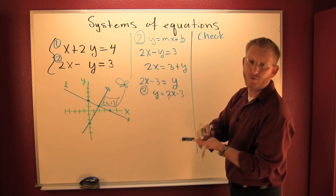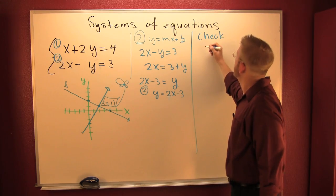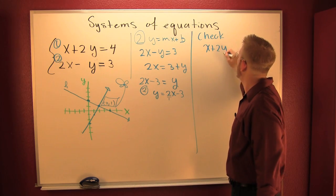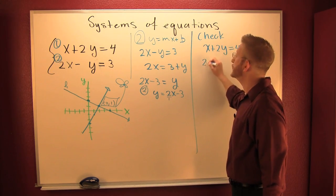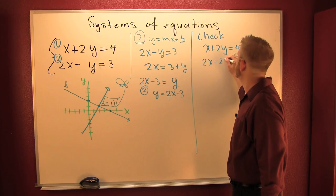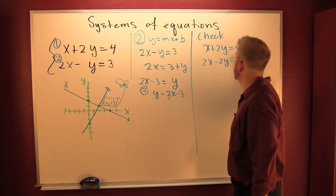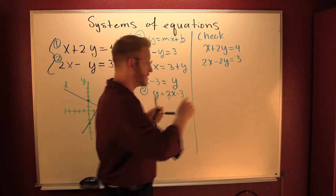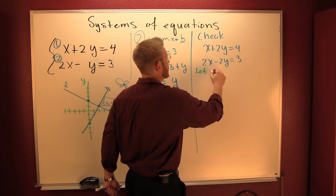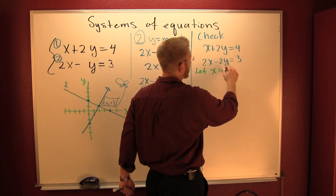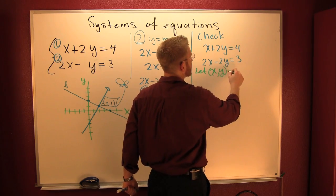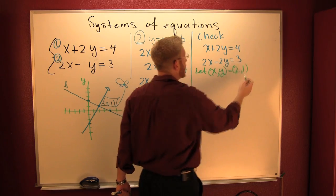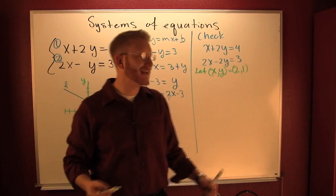So let's go ahead and rewrite our system. x plus 2y is 4, and 2x minus 2y is 3. Now what we're gonna do is we're gonna let our point equal what we found it to be — (2, 1). And then I'm gonna go in and plug it in.